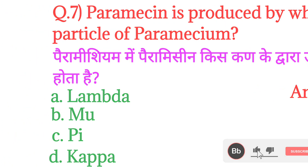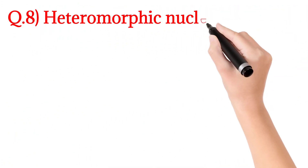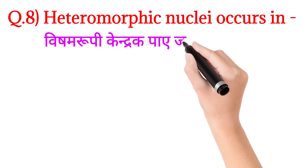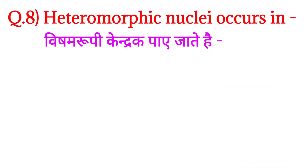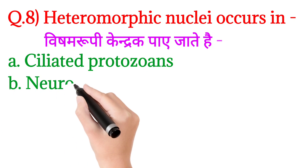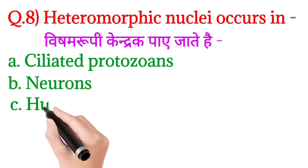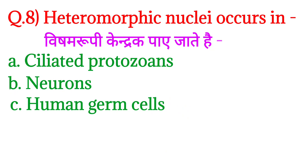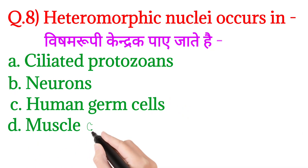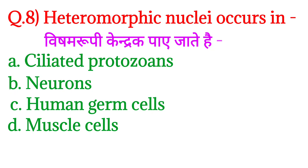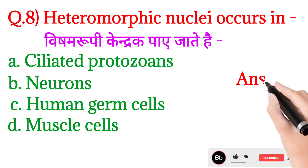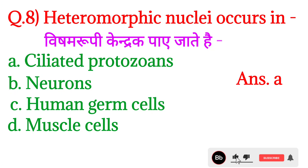Next question number 8 — heteromorphic nuclei occurs in — visham rupi kendrak paaye jaate hain kisme? Option A: ciliated protozoans, option B: neurons, option C: human germ cells, and option D: muscle cells. Iska answer hoga option number A: ciliated protozoans.